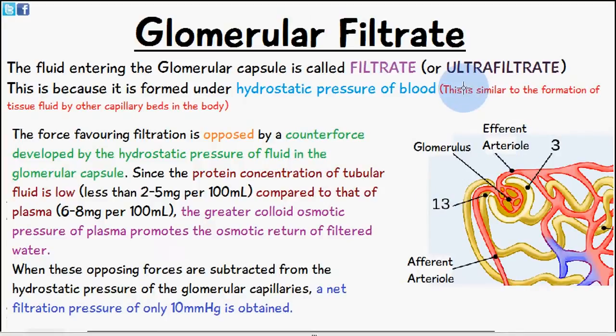It's known as filtrate or ultrafiltrate and it's formed under hydrostatic pressure of blood. This is similar to the formation of tissue fluid by other capillary beds in the body. We have the afferent arteriole here which is going to carry the blood. Here we have the glomerular capillaries. This high hydrostatic pressure of blood forces the fluid out into the glomerular capsule and is then known as filtrate.